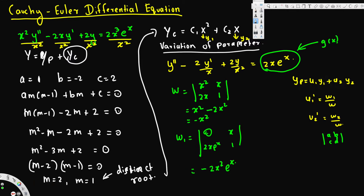To find W₂, we replace the second column with [0, g(x)]. The first column stays as [x², 2x], and the second column becomes [0, 2xe^x]. The determinant is x²·2xe^x − 0·2x = 2x³e^x. So W₂ = 2x³e^x.